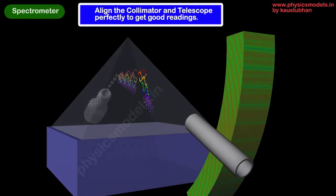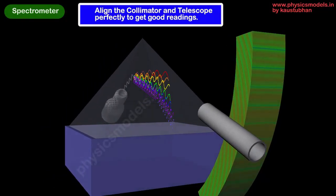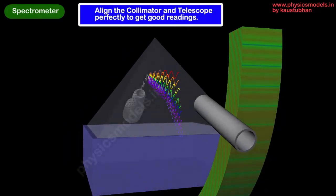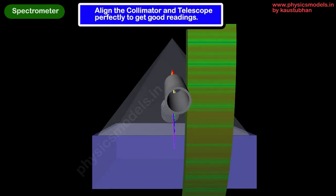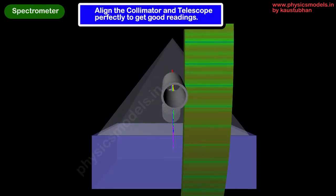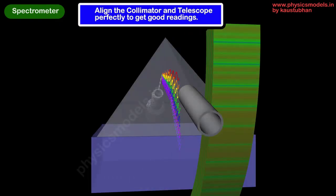So it is important to line up the telescope on the circular scale, as well as the collimator, very perfectly. This is done using vernier calipers and adjusting screws, which are not shown in this animation, but if you look through the telescope now, you can see the colors perfectly. The adjustment should be good enough to see the wavelengths coming in.